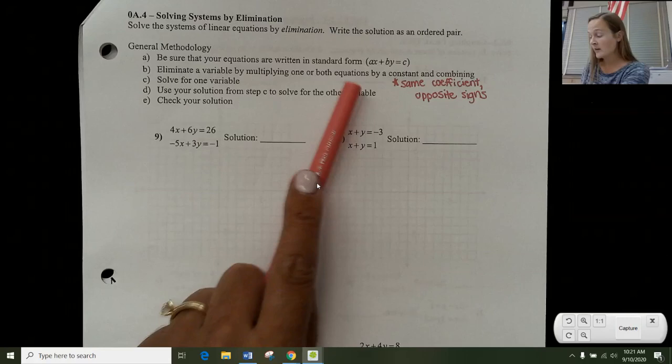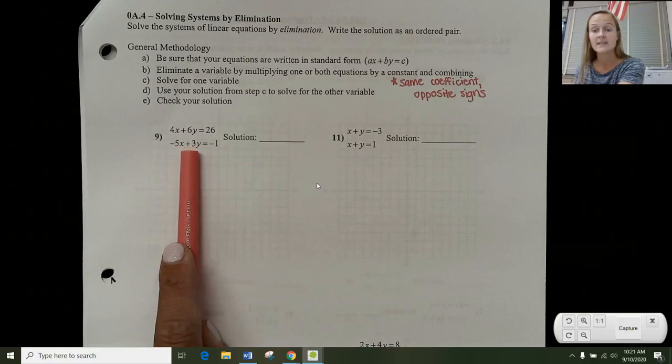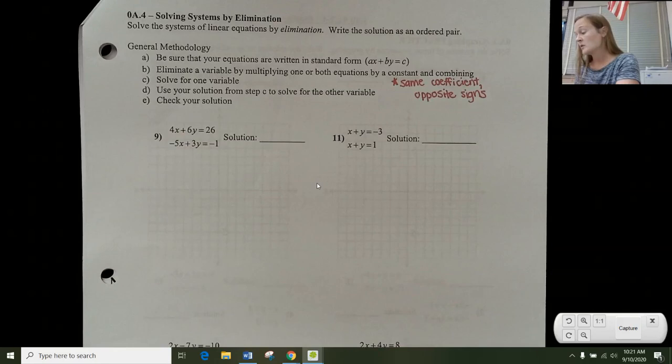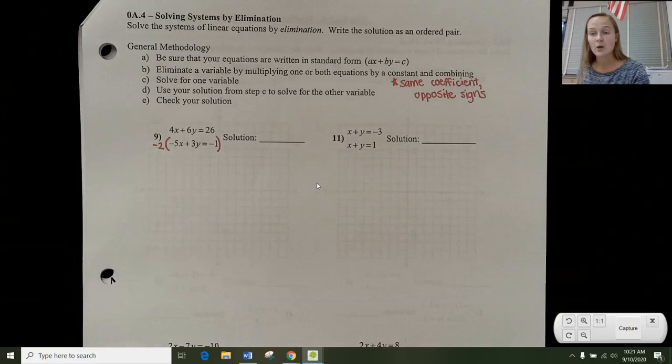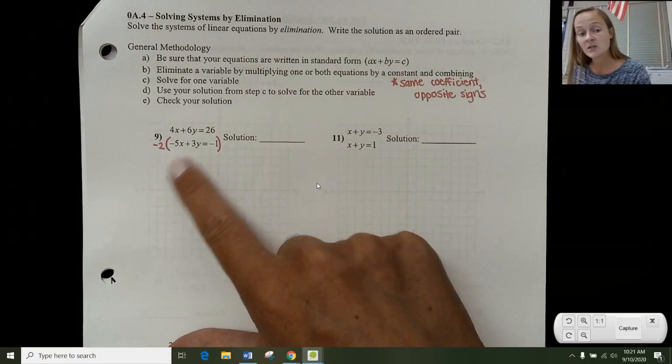So what I notice here is that if I multiply 3Y by 2, I get to 6. And that's an easy way to get to the same coefficient. Now I also want opposite signs, and these are both positive. So I'm going to multiply this bottom equation by a negative 2. So you can't just multiply one thing by the negative 2. You have to multiply the entire equation so that you have an equivalence. So 3 is going to turn into negative 6 when you multiply it by a negative 2.